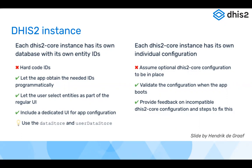In addition to having its own database, an instance can also have its own individual configuration. One instance might support certain features while another might not, so it's good practice to check whether the instance the app is running on has the correct configuration in place. It's better not to assume things will work — let the user know if something isn't working, or allow them to request additional configuration if needed.